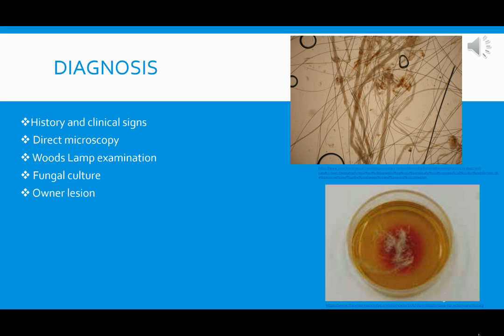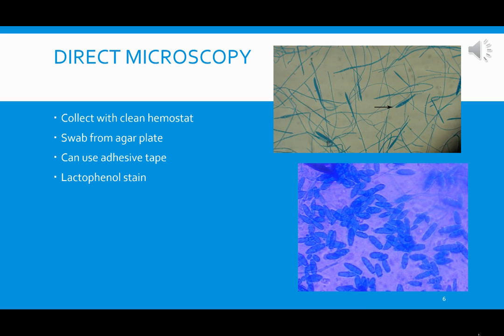A lot of times what we do with these patients is a Woods lamp examination. We can also do a fungal culture and take samples from the lesion itself to look under the microscope to find those organisms. We can also use the owner's lesions — visualizing the lesion on the owner — combined with history and clinical signs.